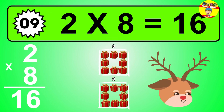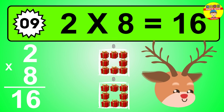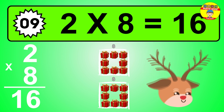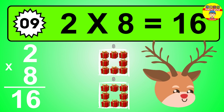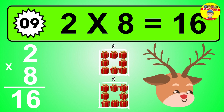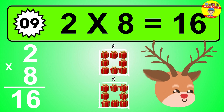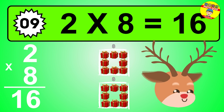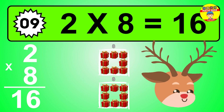The answer is two times eight is sixteen. To calculate, we have two groups with eight balls each one. So how many balls do we have? Sixteen balls.